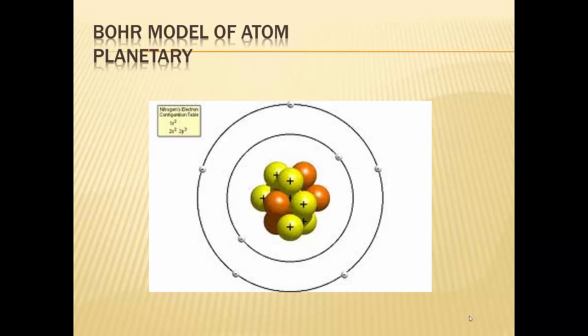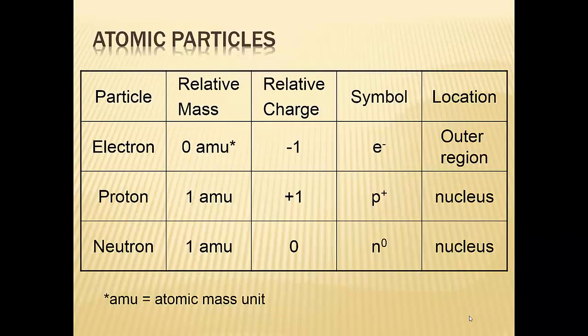At the top of page 3 it says: define electrons, protons, and neutrons. You need to know all this information — their relative mass, their charge, their symbol, and their location within the atom. The easiest way to do that is make a chart. Pause right now, write that down, and then you can get started because I'm going to keep talking but I'd rather you have it written down.